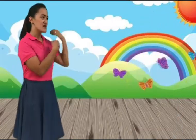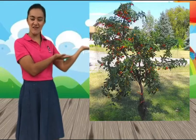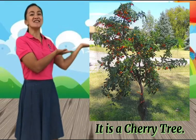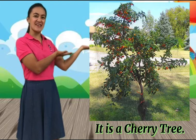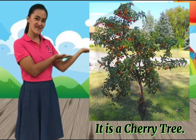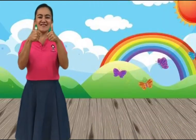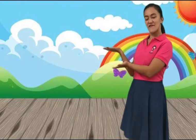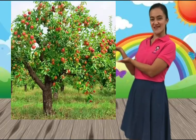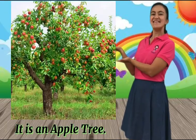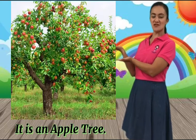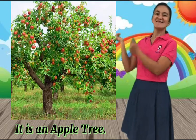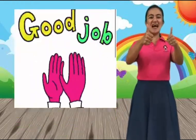Next, children. This tree has red fruits. This is a cherry tree. Again, children? What's the next tree? A cherry tree. Very good! And another red fruit. What tree is this? An apple tree. What's this again? An apple tree. Good job, children!